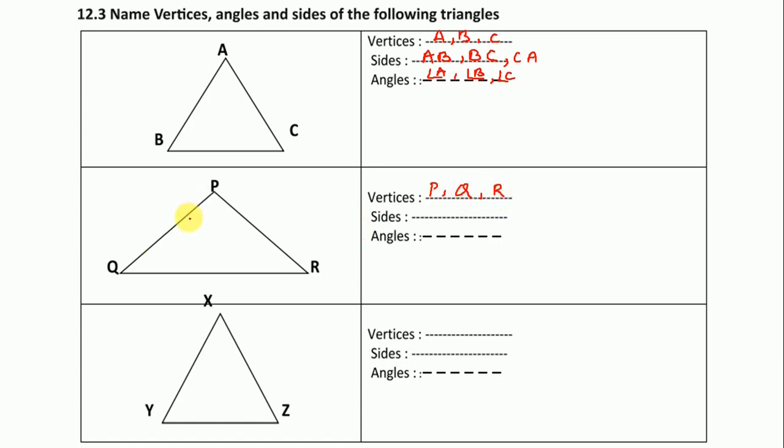Next one, PQR. Vertices are P, Q, and R. Sides we start from this side, PQ, QR, and RP. Angles are PQR, so we write angle P, angle Q, and angle R. Next is XYZ. Vertices are XYZ. Sides we start from this side, XY, YZ, and ZX. Angles are XYZ, angle X, angle Y, and angle Z.